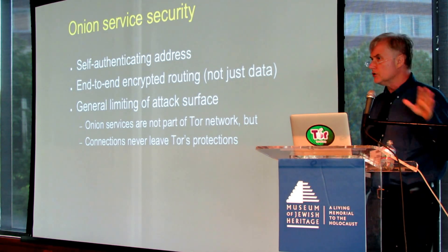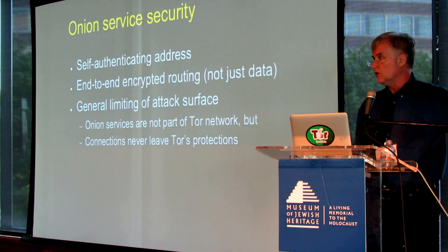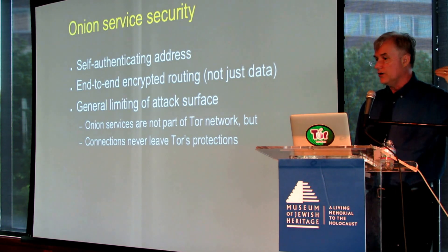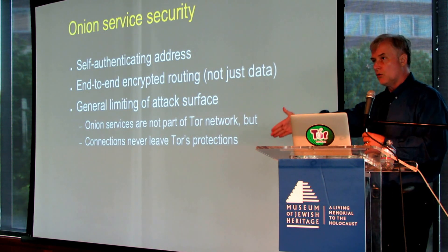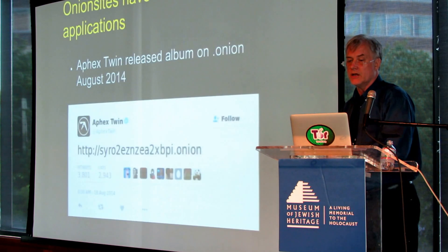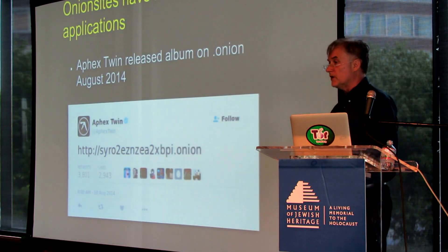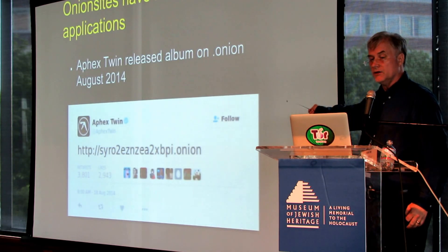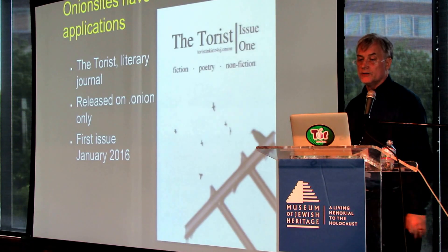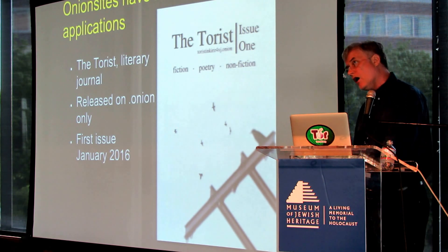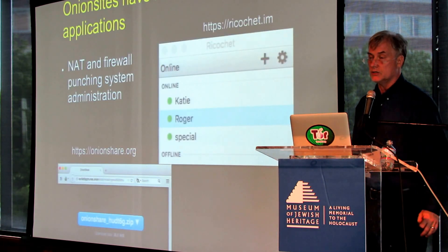That's because the Onion services themselves aren't run as part of the Tor network — anybody can go set one of those up. But the connections that go with them are always inside of Tor; they never leave the Tor network, and as such they have those protections. Now, Onion sites are used for a lot of different reasons, and people sometimes overlook this. There's a band that released an album just on .onion a couple years ago. There's now a literary journal that is only available on .onion sites. There are a lot of non-traditional web applications.